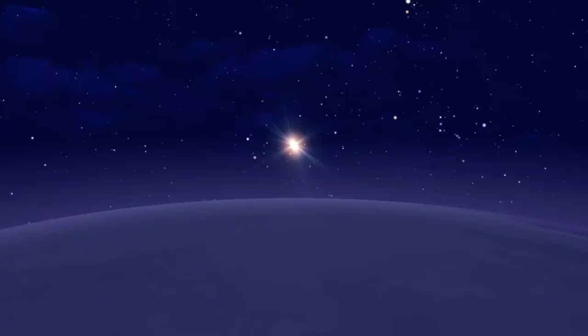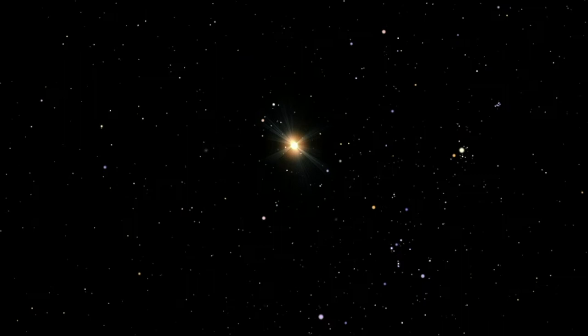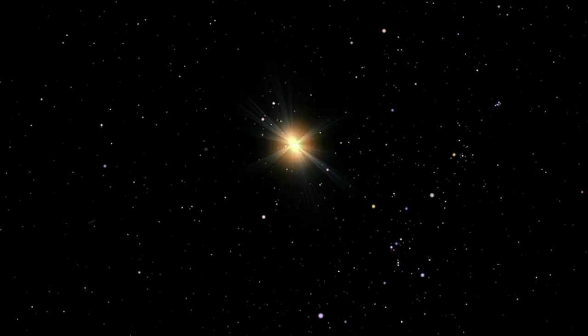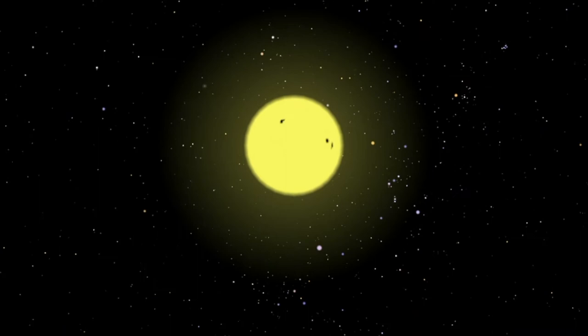But as a yellow dwarf star, it is still less than halfway through its life cycle. From our view on Earth, the Sun looks pretty small in the sky since we are 93 million miles away. Even though the Sun is actually 400,000 miles across, it is still pretty small compared to the other types of stars that exist.